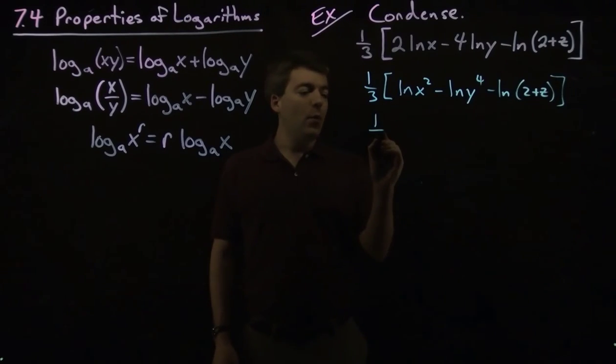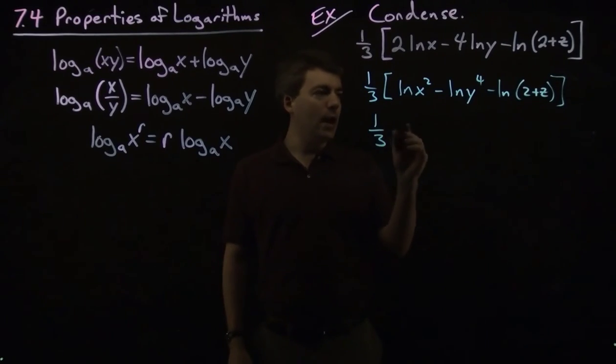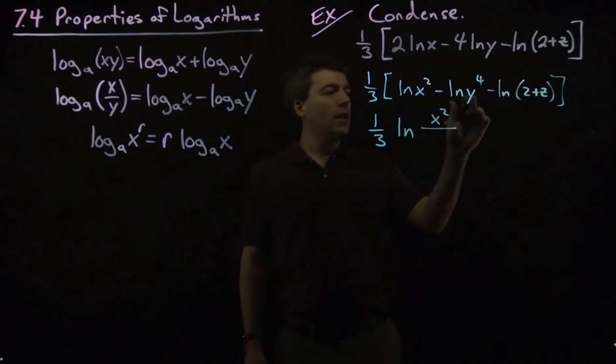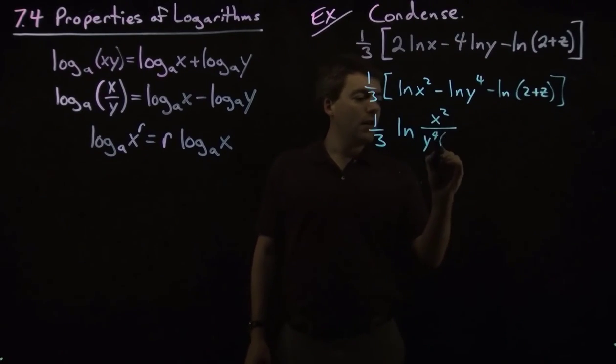Okay, so we have one-third, and then we have the natural log of x squared over y to the fourth times 2 plus z.